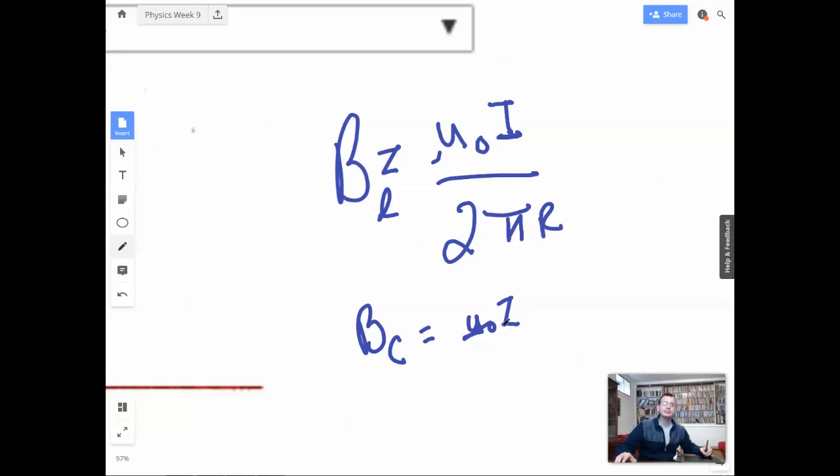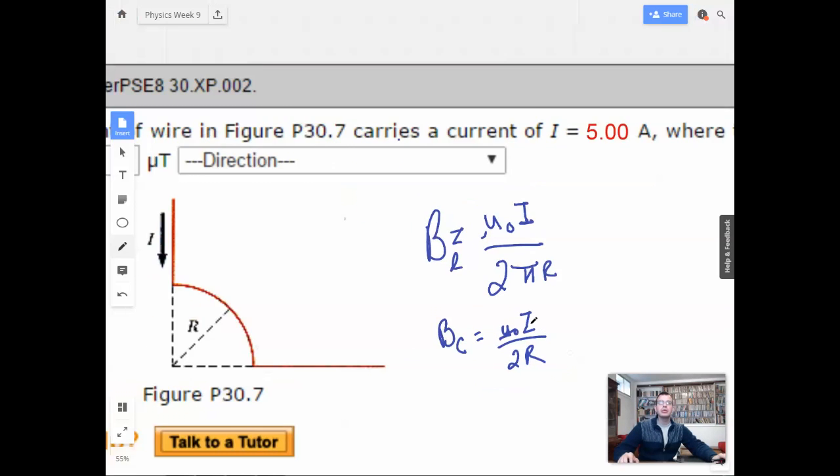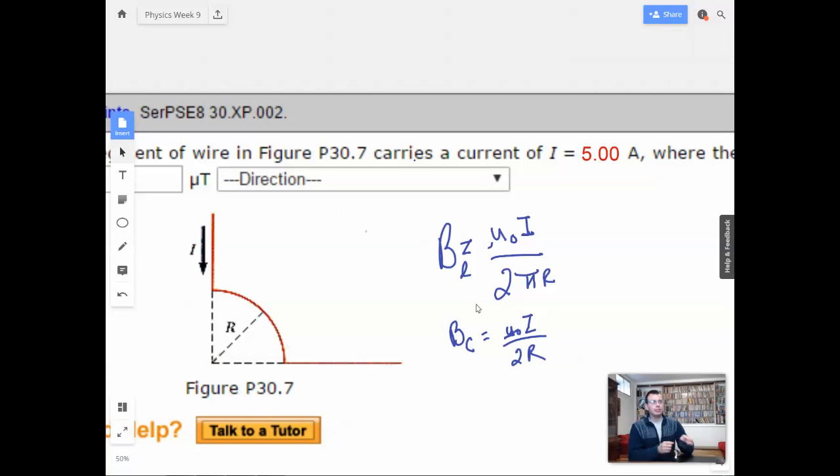So we have mu naught I over 2R. There we go. Alright, now I've lost interest in you, MJ squared glove. You're not dead to me.